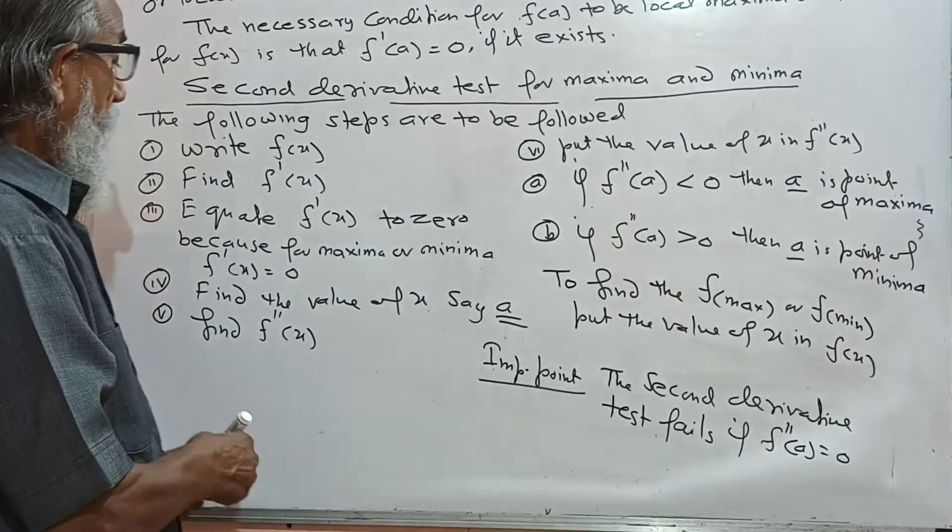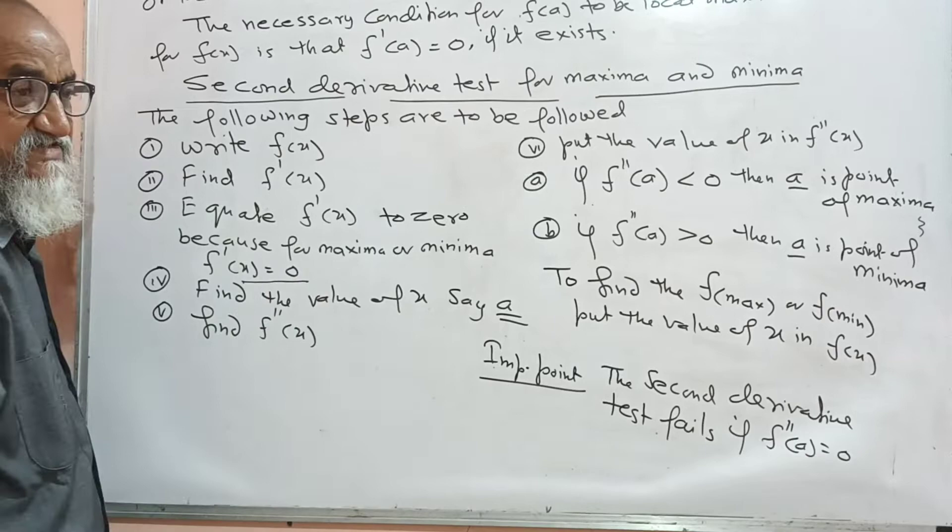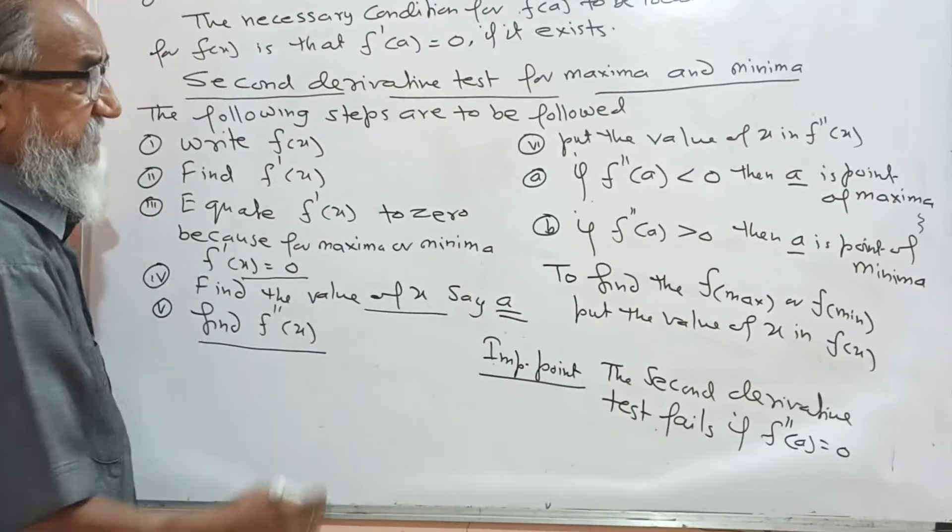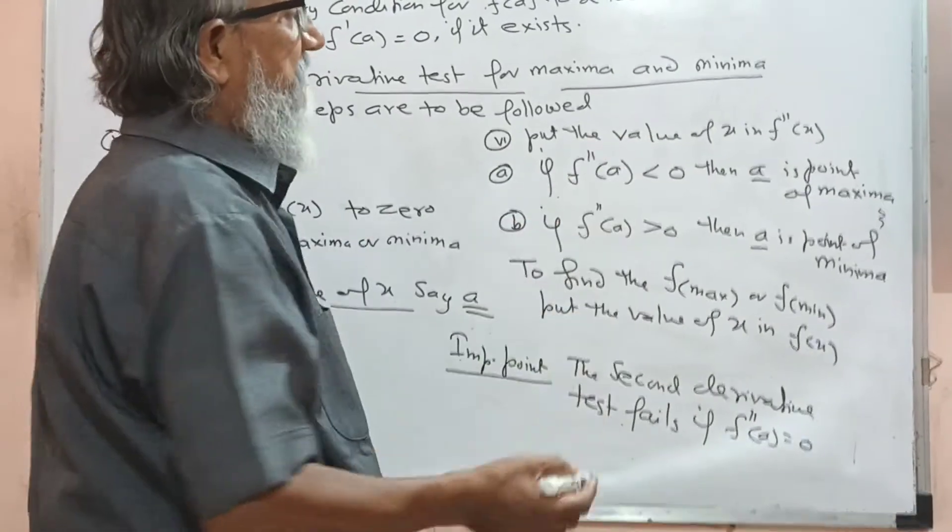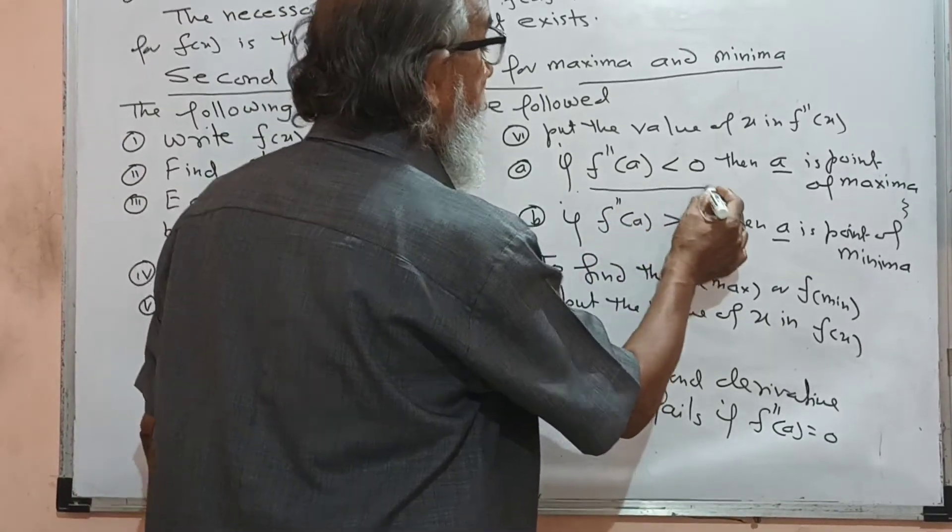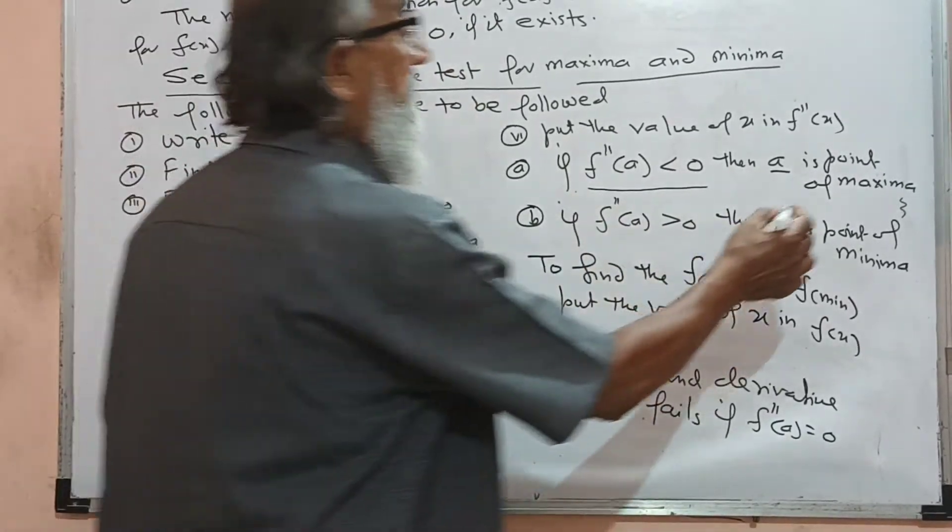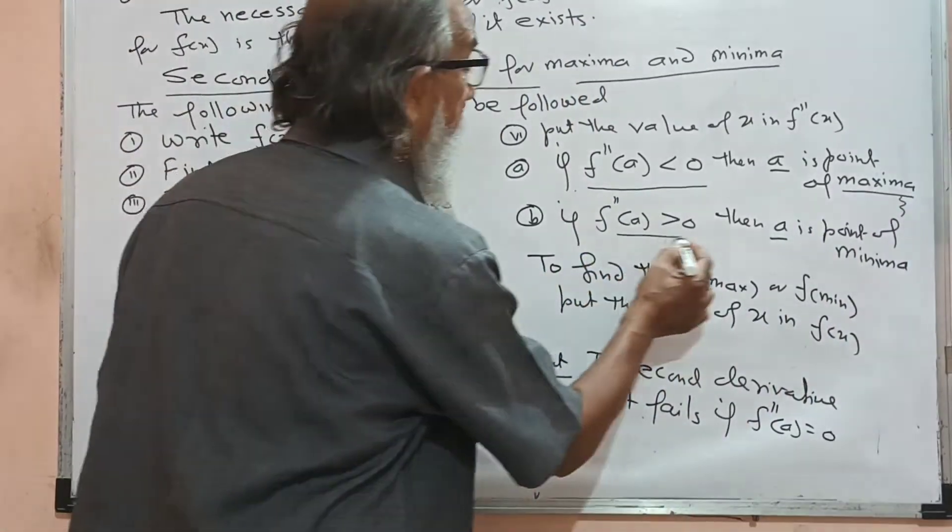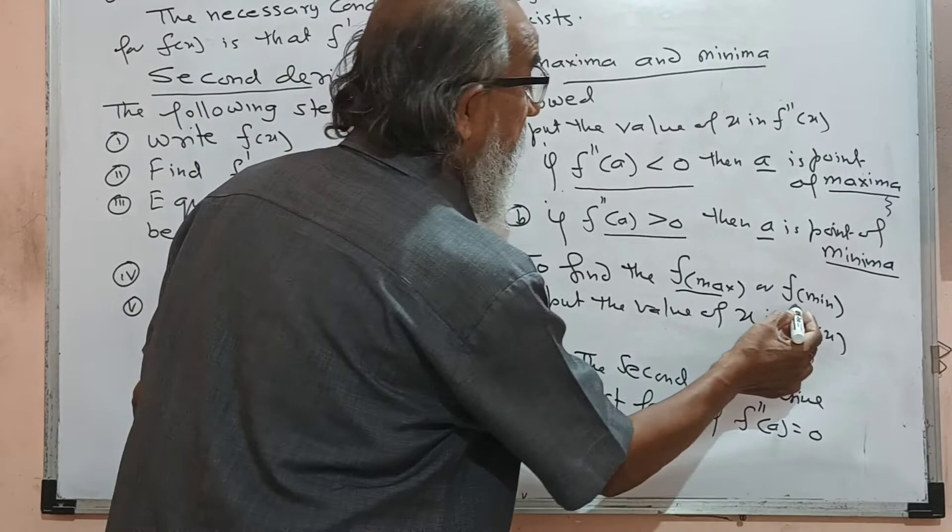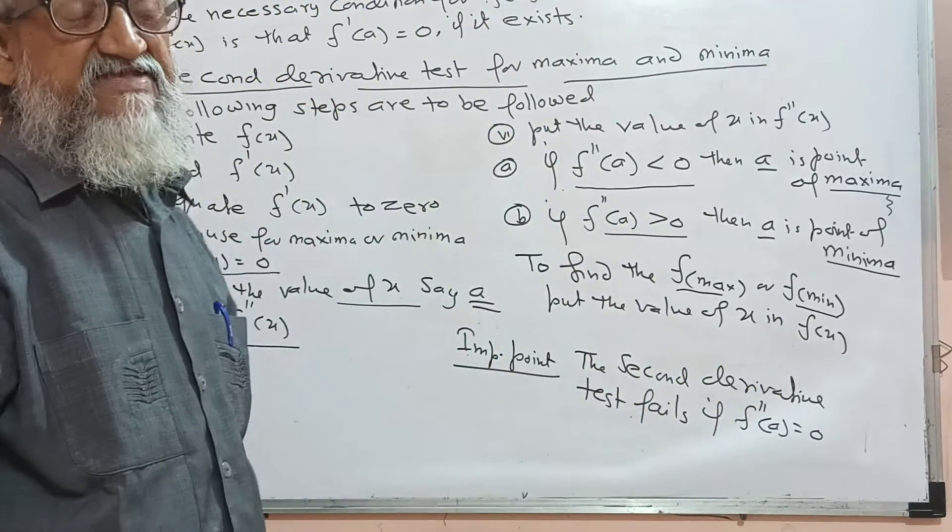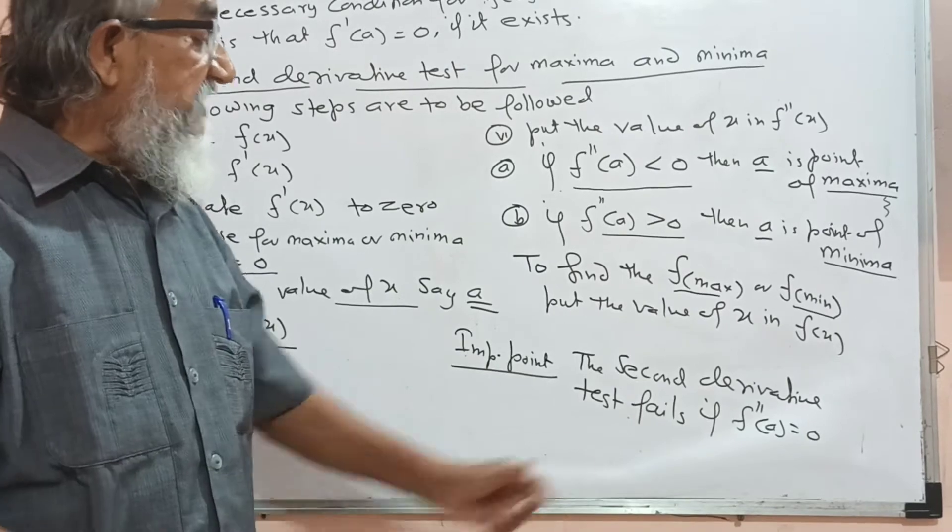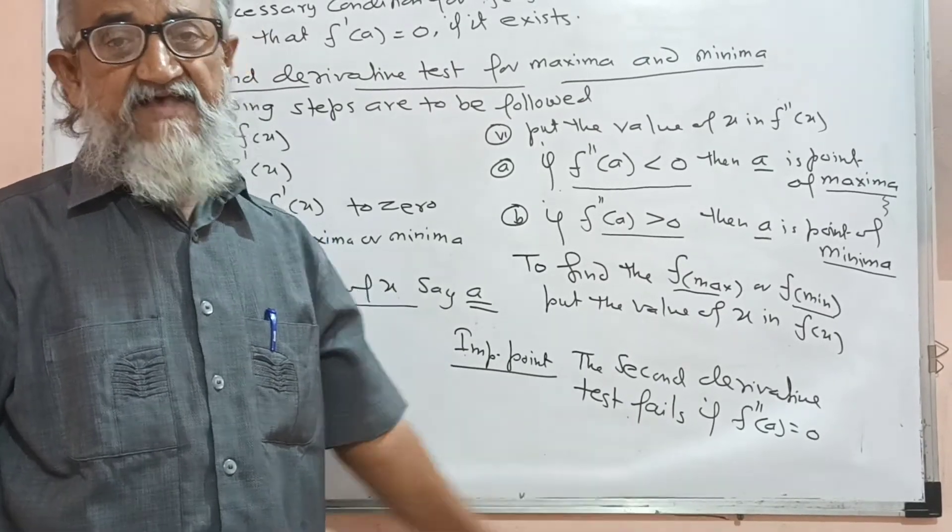So remember: you have to find where f'(x) equals 0 to get the value of x, then find f''(x) and evaluate it at that point. If f''(a) is less than 0, then a is a point of maxima. If f''(a) is greater than 0, then a is a point of minima. To find the actual maximum or minimum value, substitute x into f(x). Remember, the second derivative test fails if f''(a) equals 0.